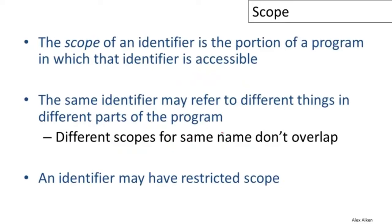These examples illustrate the idea of scope. The scope of an identifier is that portion of a program in which the identifier is accessible. The same identifier may refer to different things in different parts of the program, and different scopes for the same name can't overlap — a variable can only refer to one thing in any given part of the program. Identifiers can also have restricted scope.